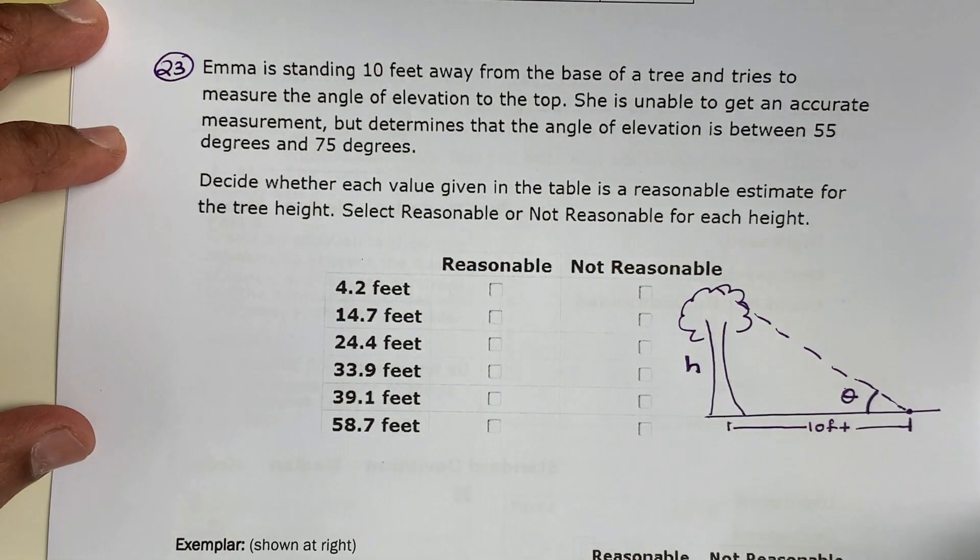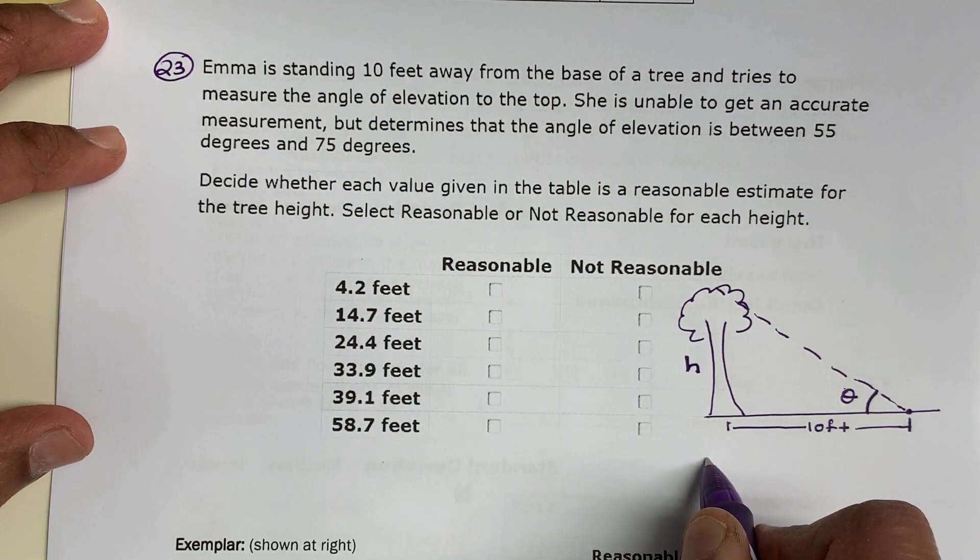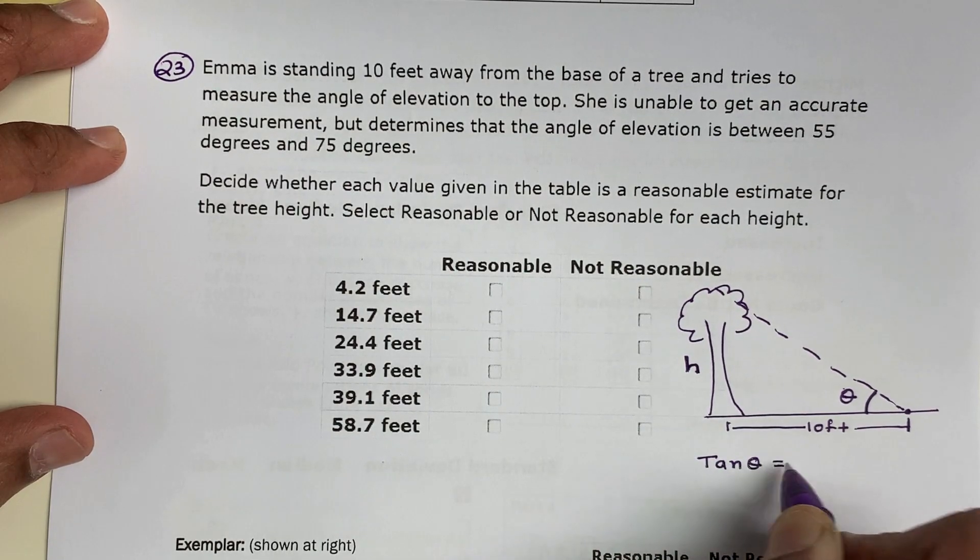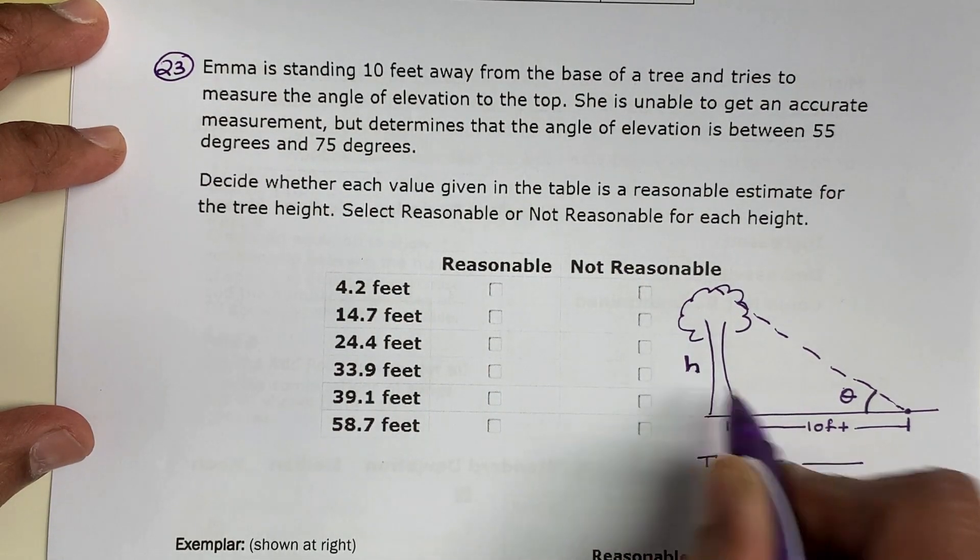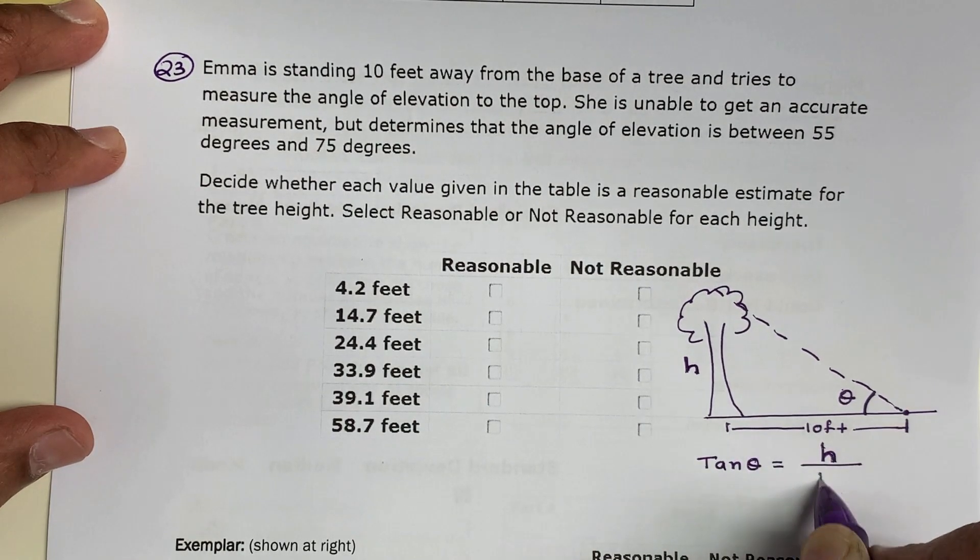The known side is the adjacent side to that angle. So I'm thinking about trying to do this question using tangent. I'm going to set it up: tangent theta equals opposite, which is H, divided by adjacent 10.